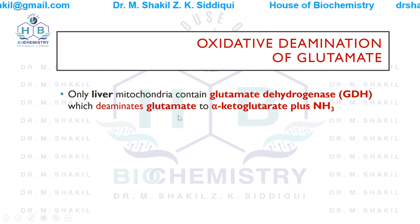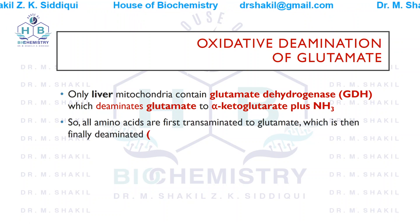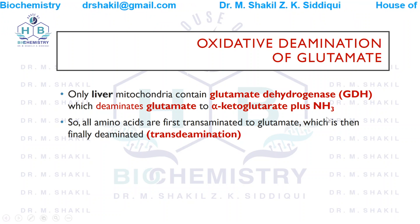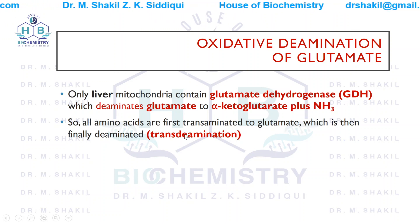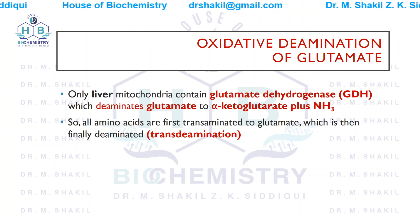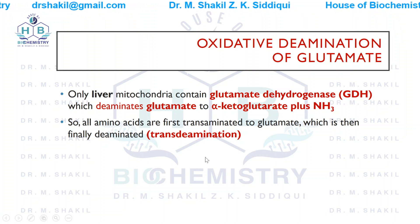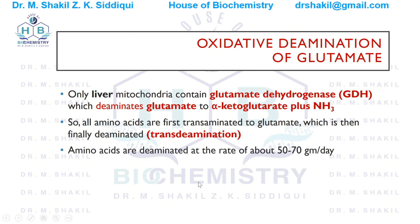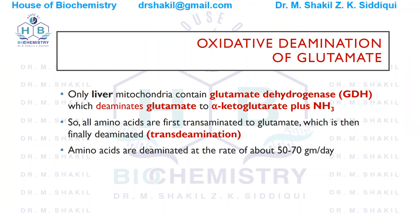Ammonia is liberated, converted into urea, transferred into the blood, then the kidney, and excreted through urine. So all amino acids are first transaminated to glutamate and then finally deaminated in the mitochondria. This process is known as transdeamination because it takes place at two different locations — transamination in the cytosol and deamination in the mitochondria, but they are coupled. Amino acids are deaminated at a rate of about 50 to 70 grams per day.